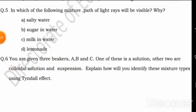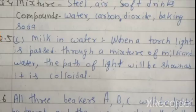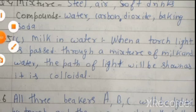Fifth: In which of the following mixture will the path of light ray be visible and why? When a torch light is passed through a mixture of milk and water, the path of light will be shown as it is colloidal.